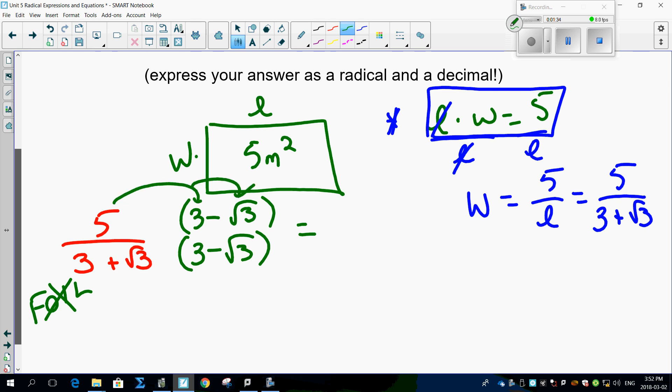Multiply it out. 5 times 3 is 15. 5 times root 3 is minus 5 root 3. There's your top. Everything's fine.